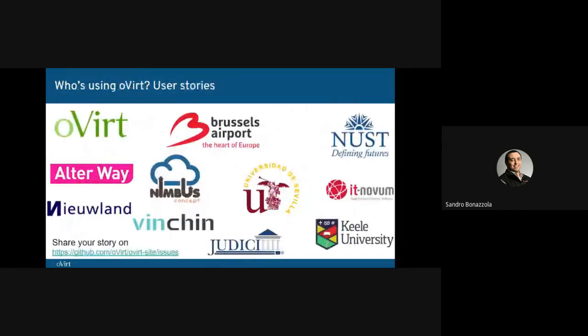On the oVirt website you can find featured stories from past years under the community section. Something I like to repeat at this conference is that the first oVirt user is the oVirt project itself. In the oVirt project data center, we're running on nine data centers, 15 storage domains, 11 hosts, and 160 VMs. If you want to share your story, feel free to open a ticket on the GitHub issue tracker for the oVirt website and we'll help you publish it.